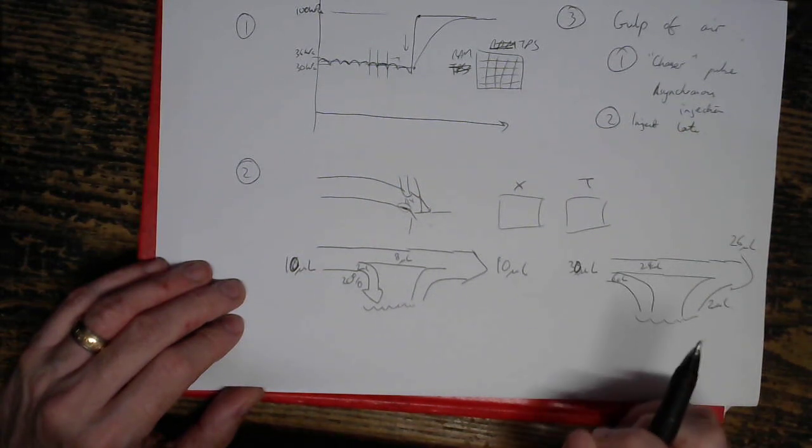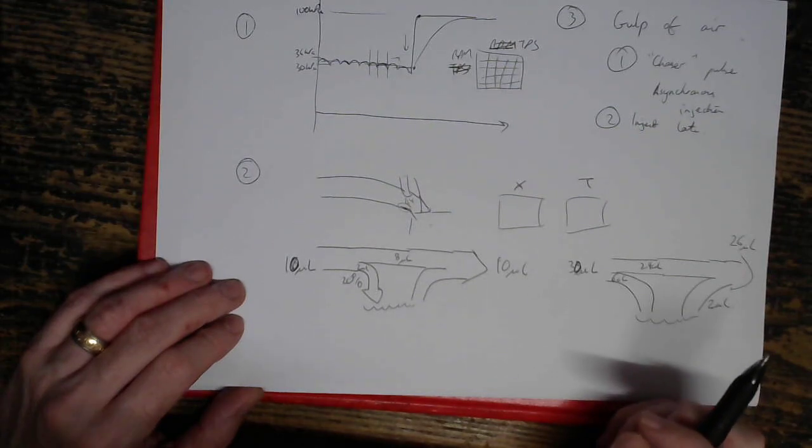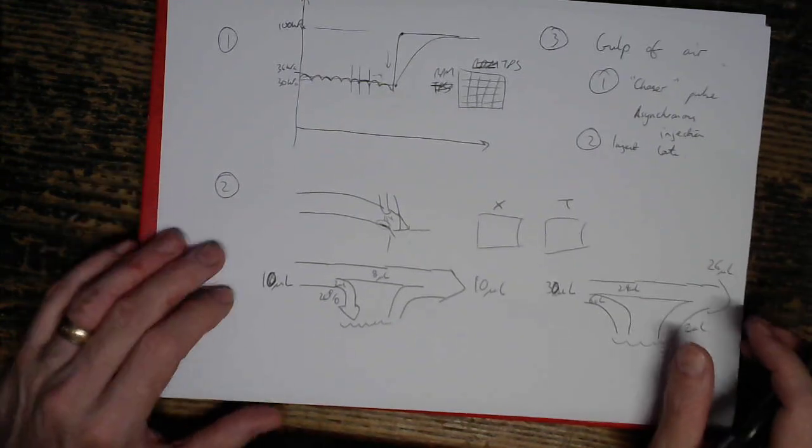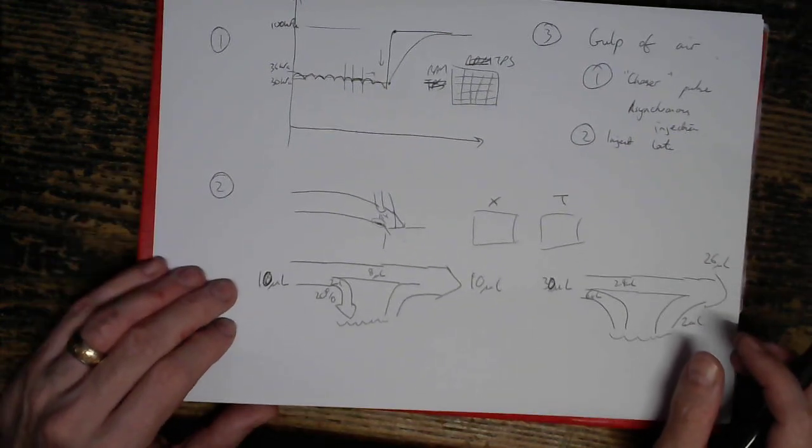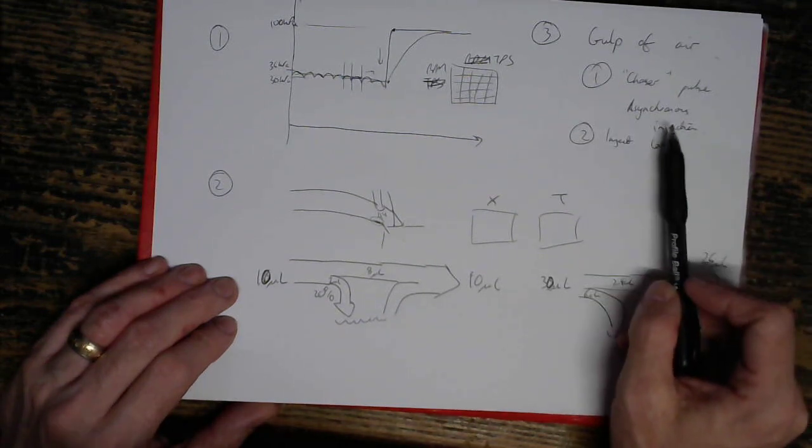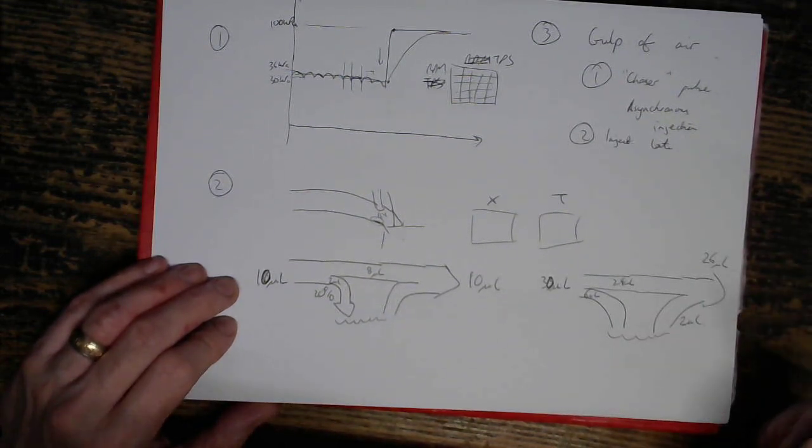And then another question is, does this replace the transient throttle model or do you use them together? It's intended to replace the transient throttle model, but if you find that you still need some asynchronous injection, then you'll need to use the classic one as well.